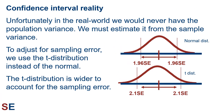Unfortunately, in the real world we would never have the population variance if we didn't already know the population mean. And if we already knew the population mean, we don't need to be doing statistics at all. We therefore estimate the population variance from the sample variance. However, samples usually underestimate the actual variance of the population due to sampling error. Therefore, to adjust for this sampling error, we use the t distribution instead of the normal distribution.